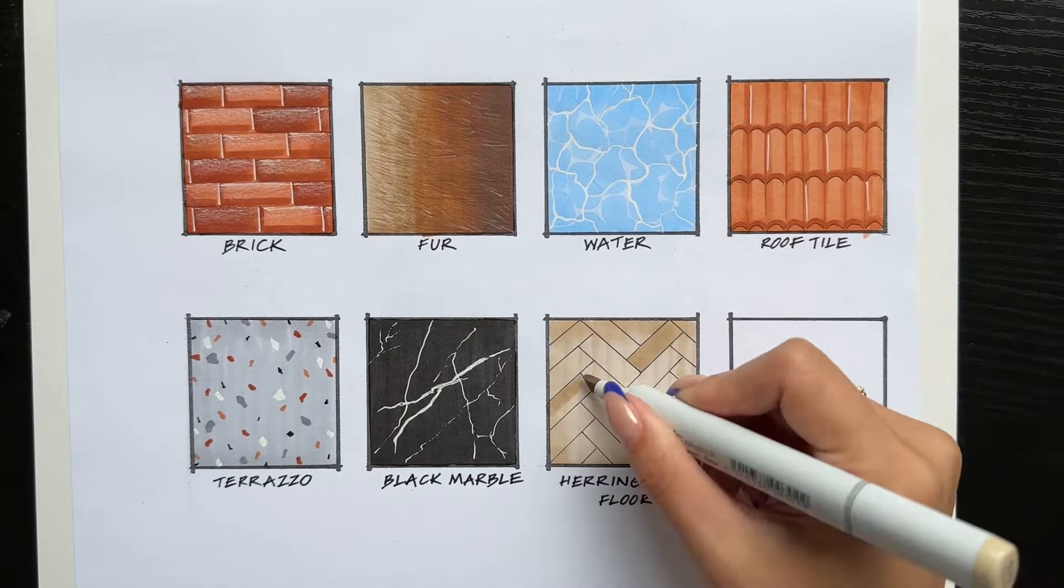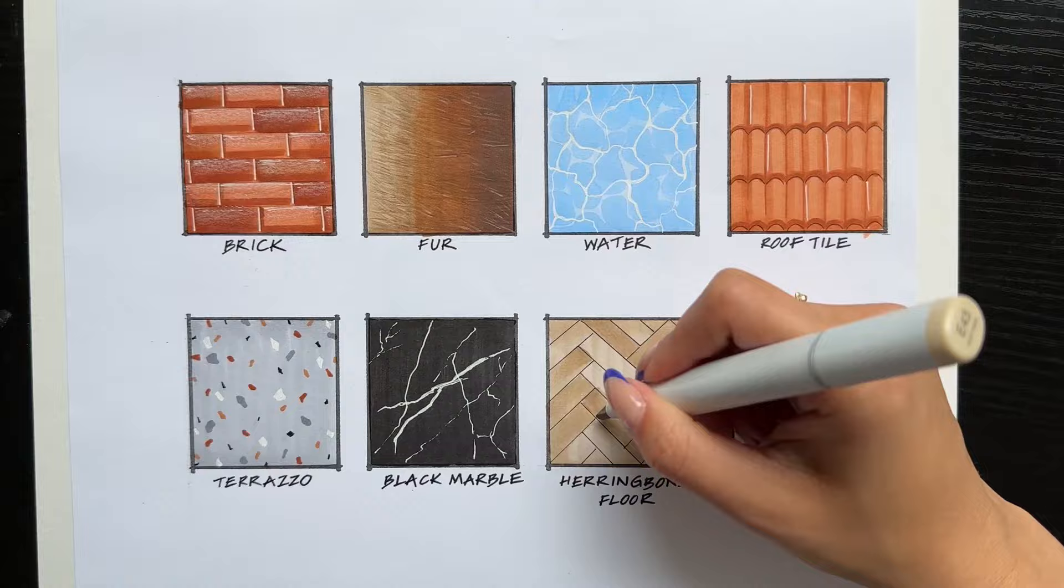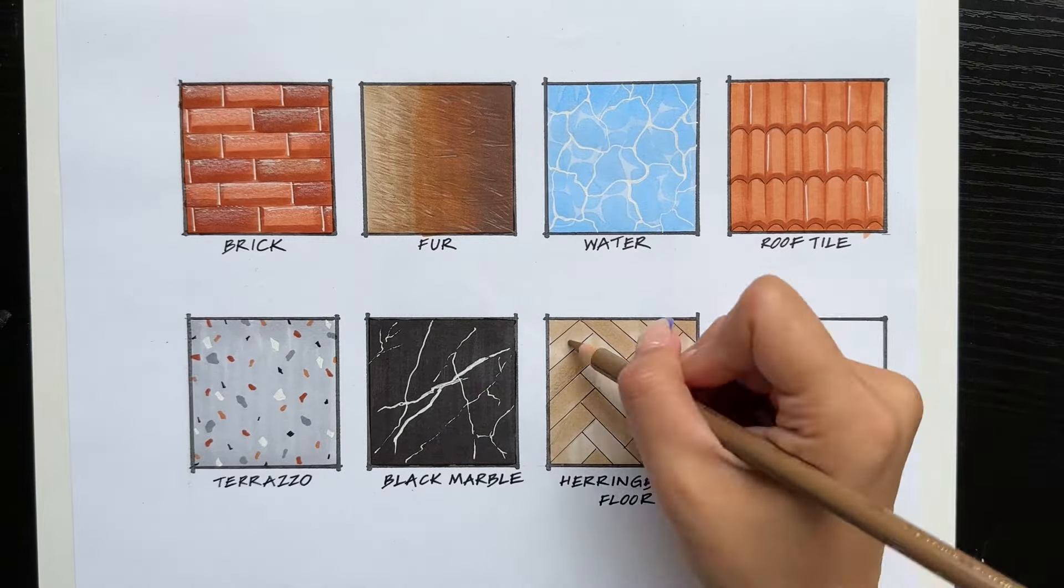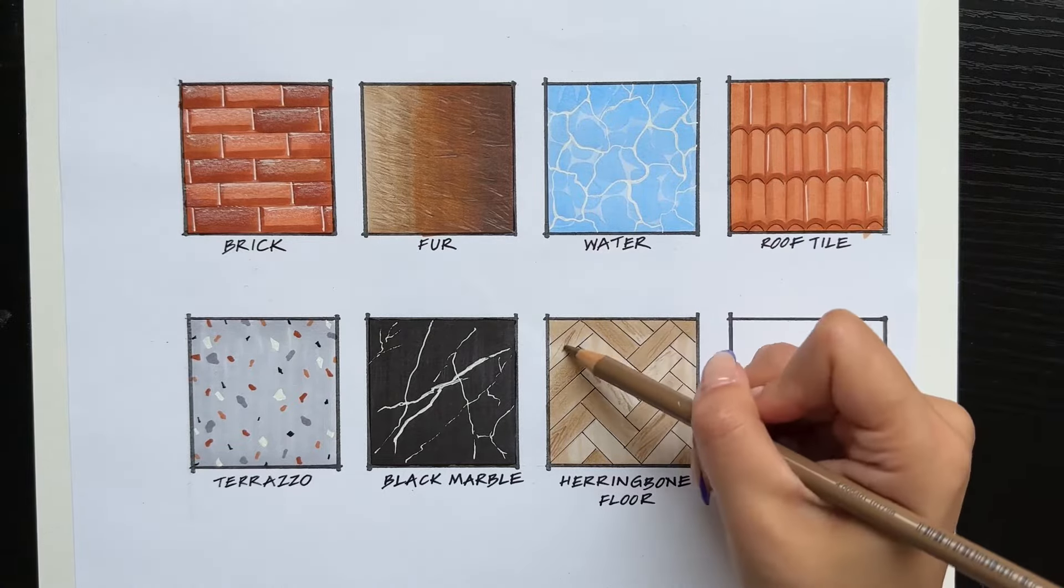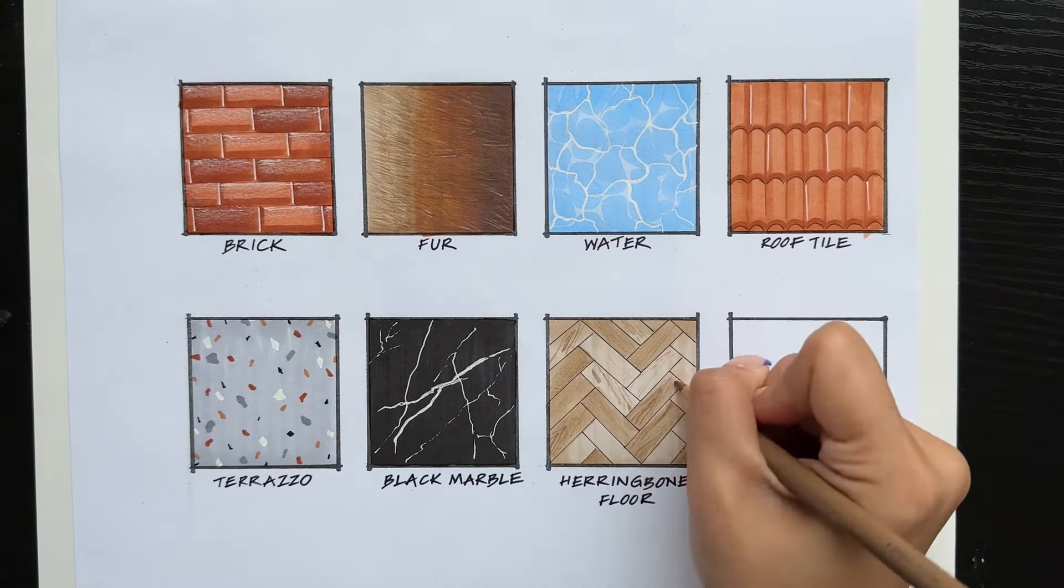Then choose an appropriate brown color you want for your wood flooring. This one I'm doing more of like a light oak color. And lastly, you can just use some pencil crayon to add some wood grain and definition to each of the wood planks.